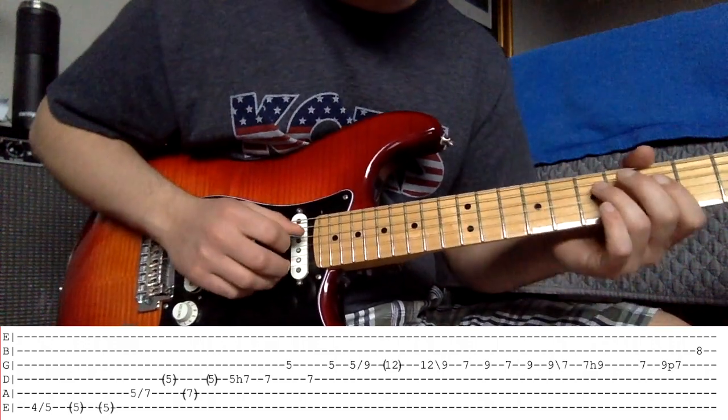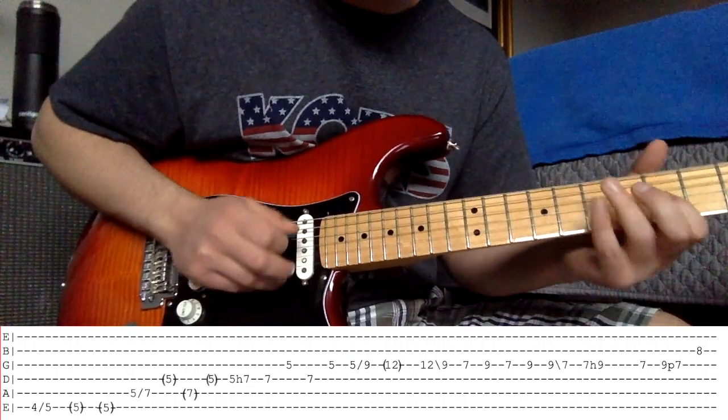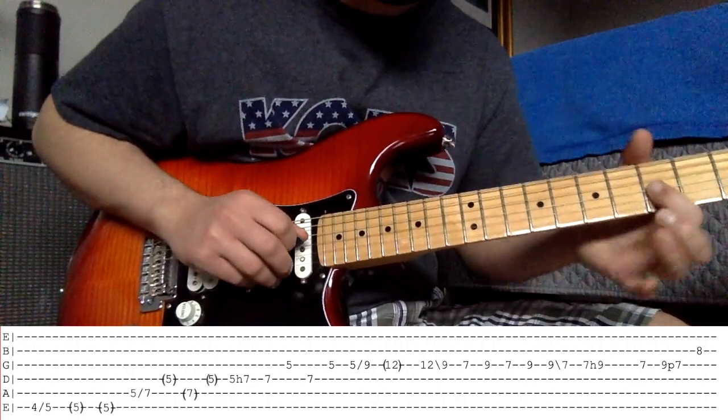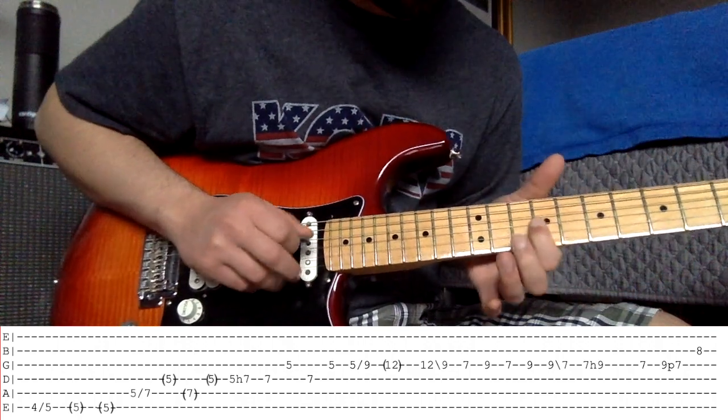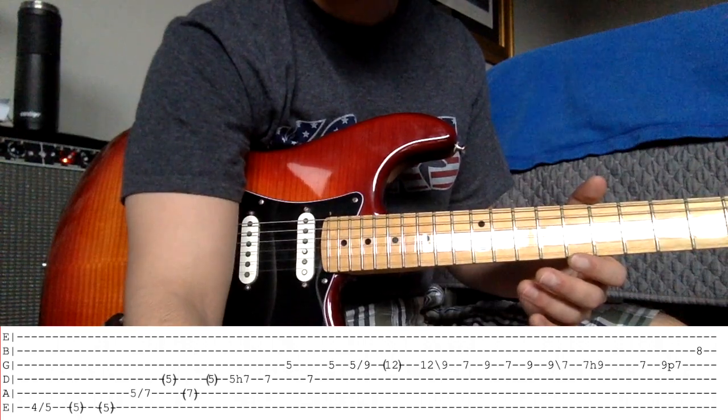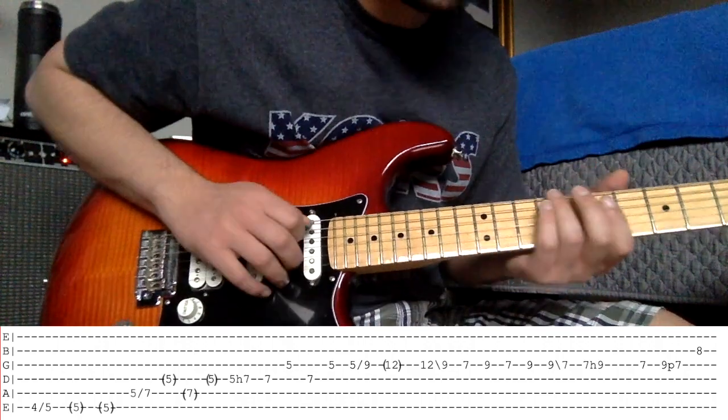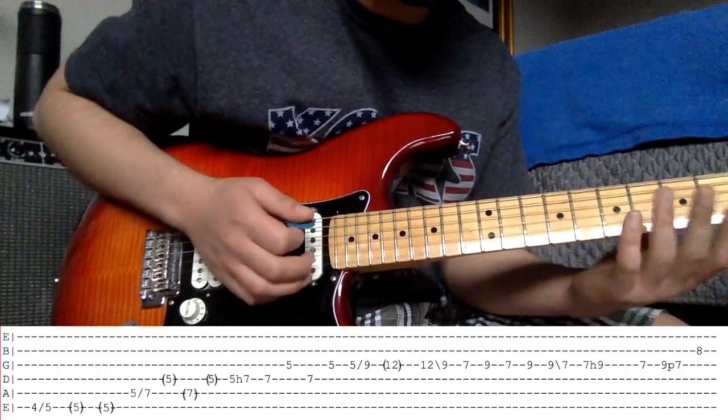Now what that is, is it's 7, 5. 7 on the D, 5 on the G twice. And then slide 5 to 9 on the G. So, that sounds kind of like this. So, I'll do it from this point.